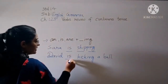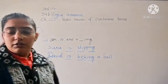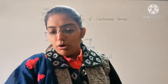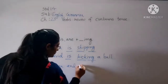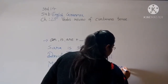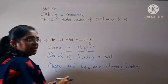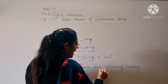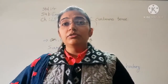The formation is: is + were + ING. Third example: 'Megan and Jen are playing hockey.' Here there are two names, so we use 'are'. Formation is: are + were + ING. So these were examples of Present Continued Tense.